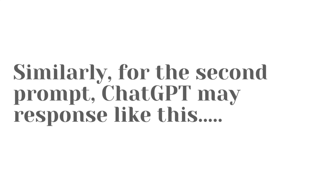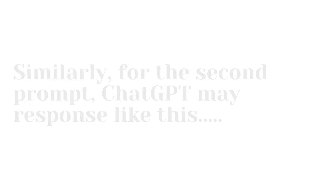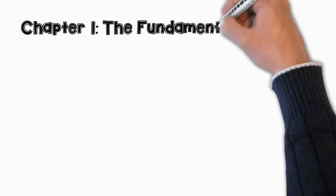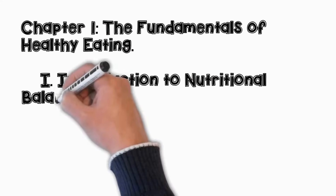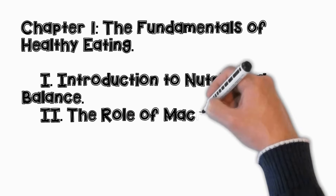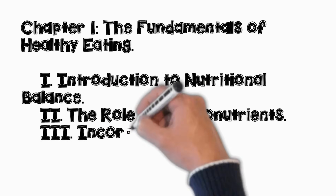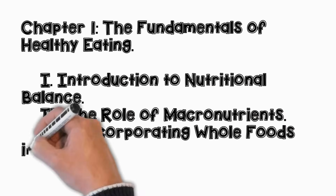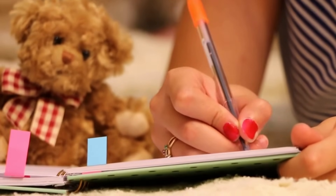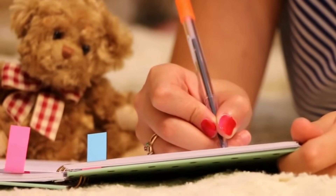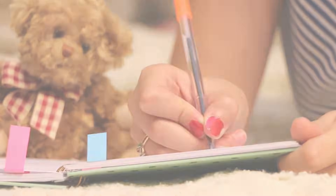Similarly, for the second prompt, ChatGPT may respond with Chapter 1: The Fundamentals of Healthy Eating, including subtopics like Introduction to Nutritional Balance, The Role of Macronutrients, and Incorporating Whole Foods in Your Diet — and so on, until 9 to 10 chapters. After you are done generating outlines, it's your chance to read them and use the research you carried out earlier on the topic, and find out any extra chapters you need to add.